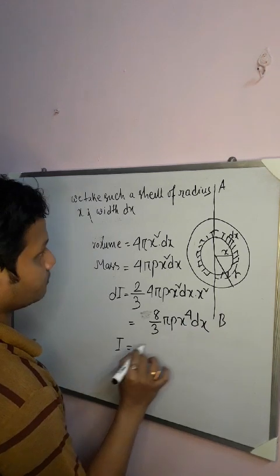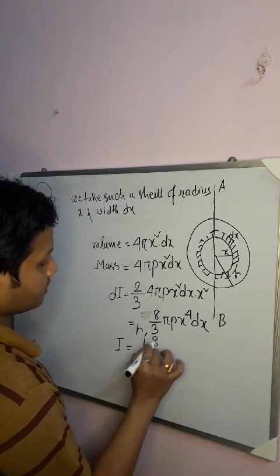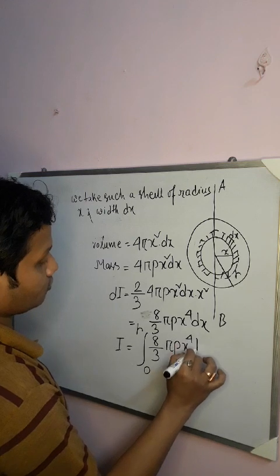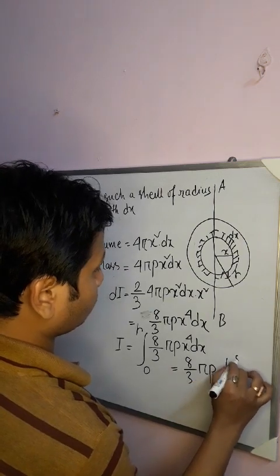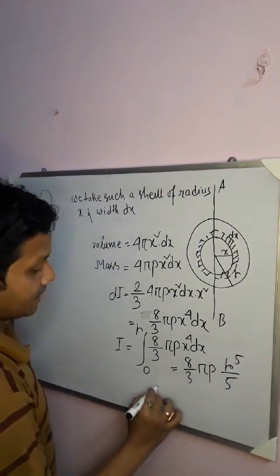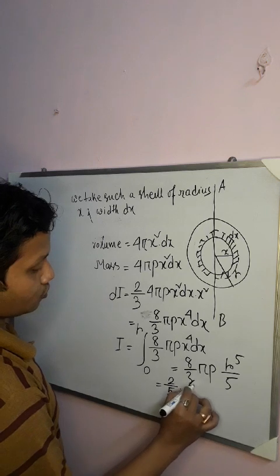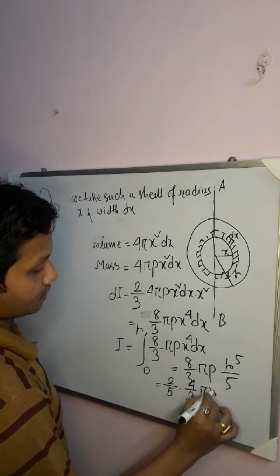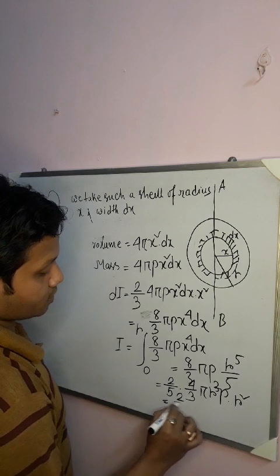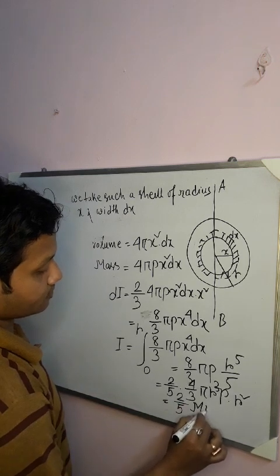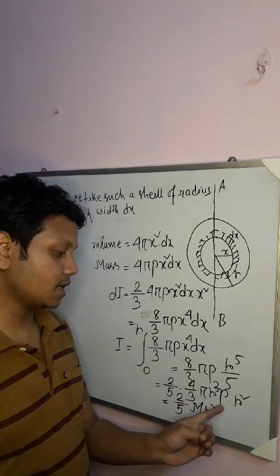The moment of inertia of the entire sphere about AB is obtained by integrating from 0 to R: I = ∫₀^R (8/3)πρx⁴ dx = (8/3)πρ(R⁵/5) = (8/15)πρR⁵. Since the mass of the solid sphere is M = (4/3)πR³ρ, this gives I = (2/5)MR².